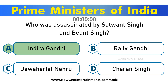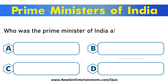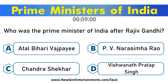Who was the Prime Minister of India after Rajiv Gandhi? Options are A. Atal Bihari Vajpayee, B. P.V. Narasimha Rao, C. Chandrashekhar, D. Vishwanath Pratap Singh. Answer is Option D. Vishwanath Pratap Singh.